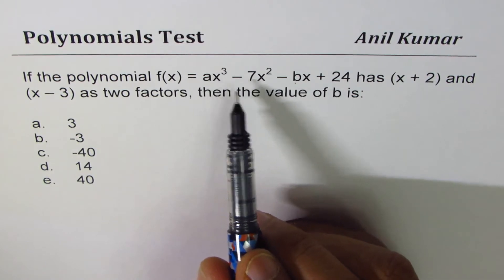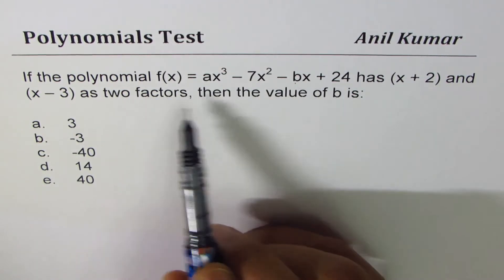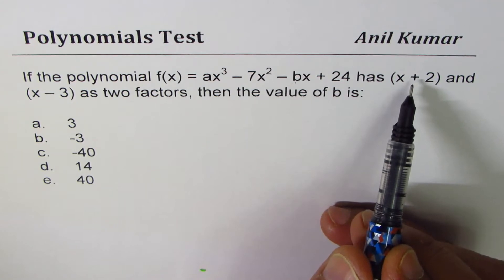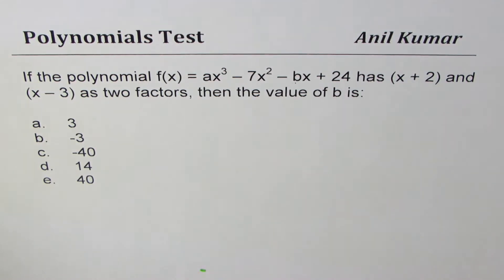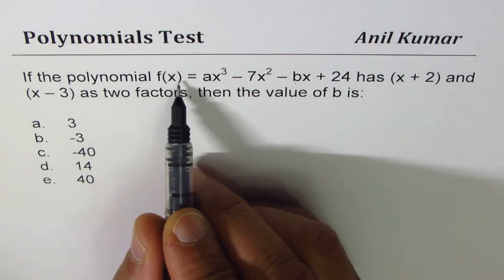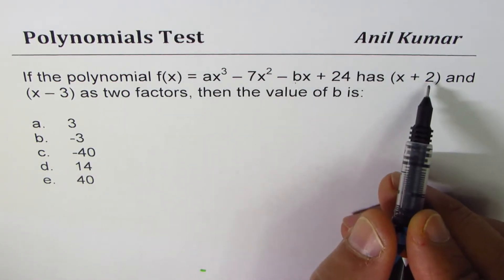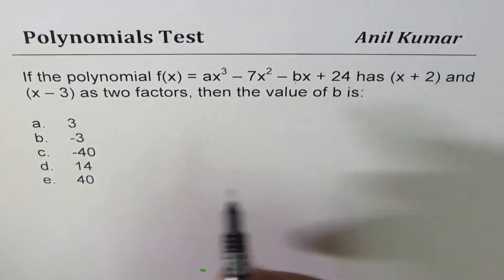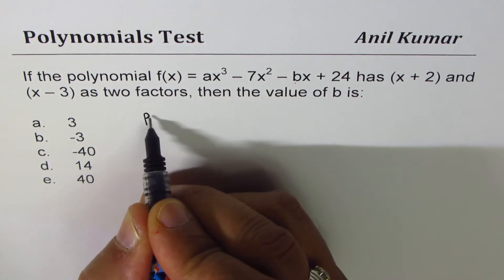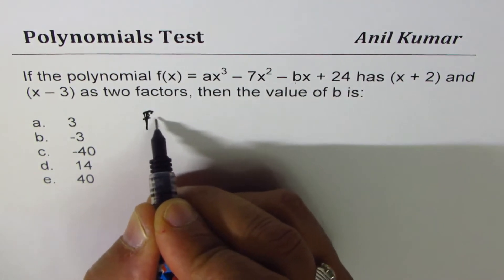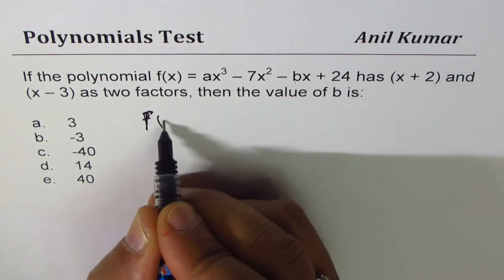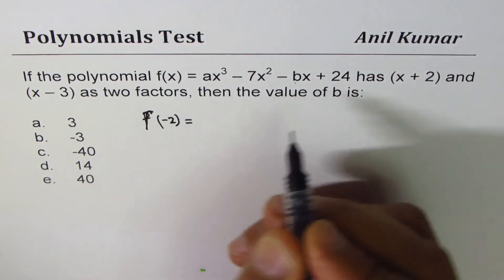We know that there are two factors that are given to us. Factors means remainder is 0, right? You could also say factor theorem for that matter. So, when I divide this polynomial by (x + 2), the remainder is 0. It really means that the value of this function, f(x), at -2, f(-2) should be 0.